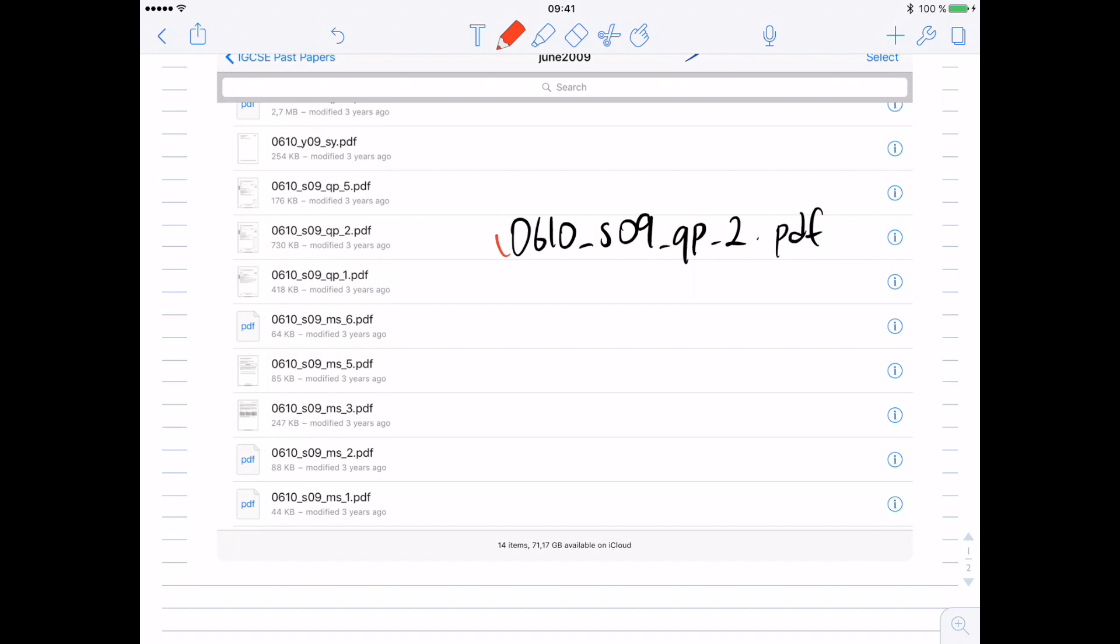First of all, 0610 refers to the syllabus code. Every syllabus, every subject has a code and 0610 is the code for biology.